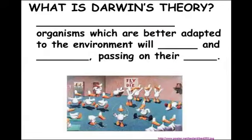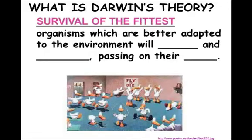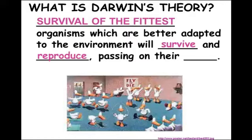The flip of that is also true: some organisms are going to be better adapted to their environment. Darwin called that idea survival of the fittest. In a competition, the organisms that have the traits to help them survive in their place are going to be more likely to stay alive long enough to reproduce and pass those beneficial traits on to their offspring. We now know what's being passed on is the genes.